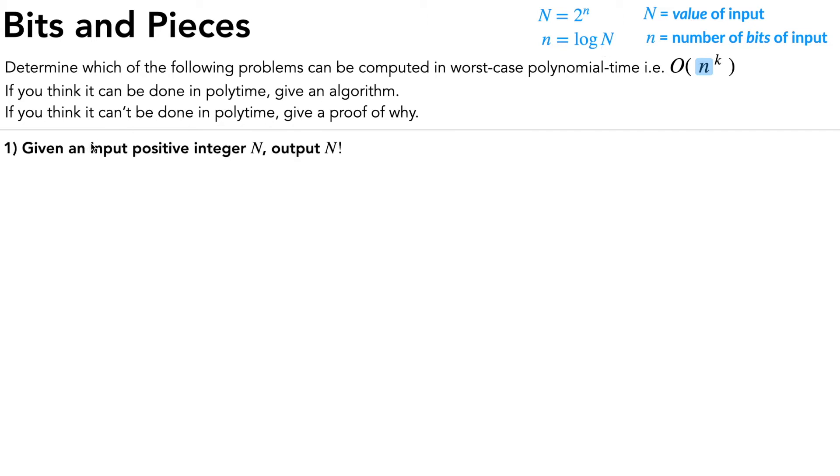So problem one, given an input positive integer N, output N factorial. So take a moment, pause here, and see if you can either give a polytime algorithm or prove that it cannot be done in polytime. Okay, the answer is no.